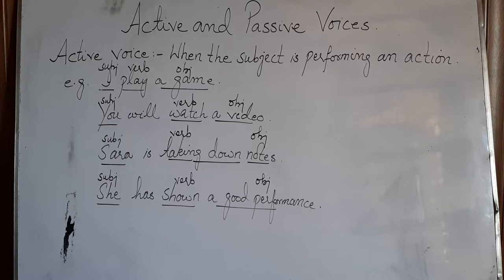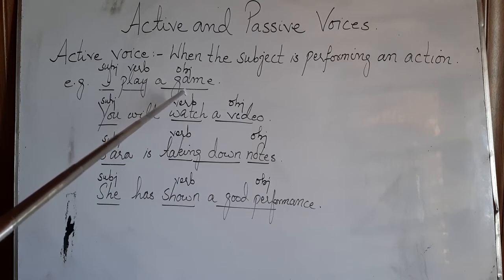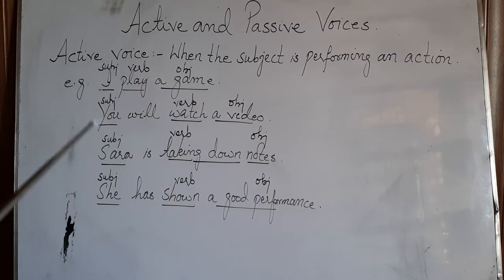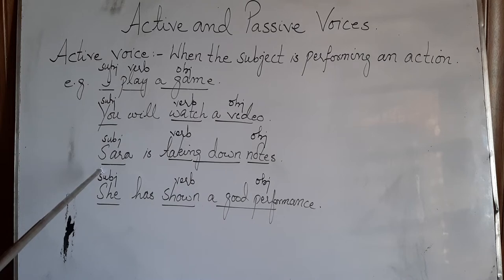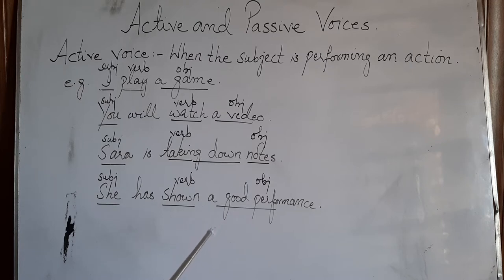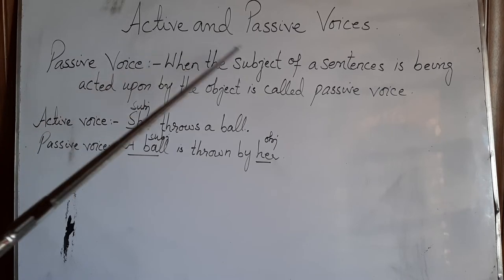In the next sentence, 'she has shown a good performance' - 'she' is the subject, 'shown' is the action word, and 'a good performance' is the object. This is called active voice - when the subject is performing some action directly and has a direct object in the sentence as well.